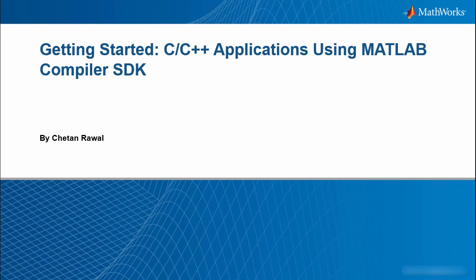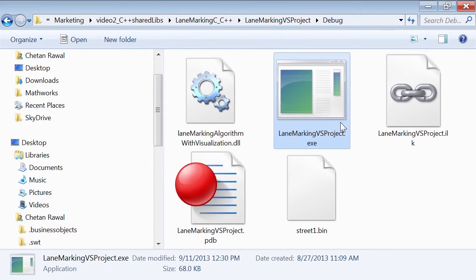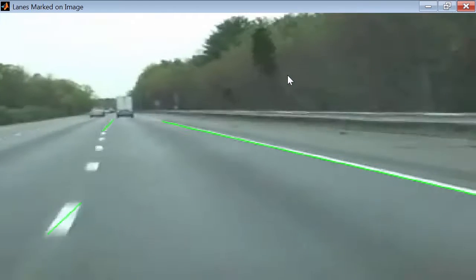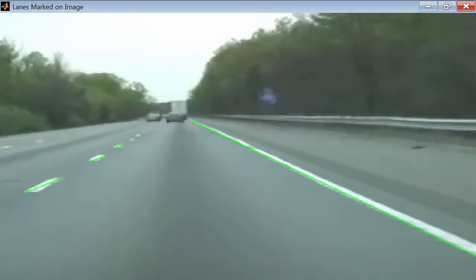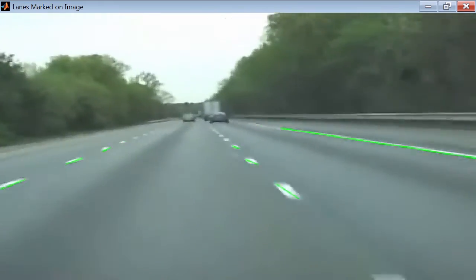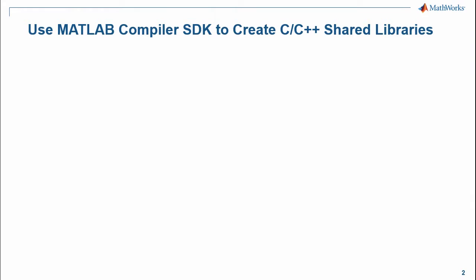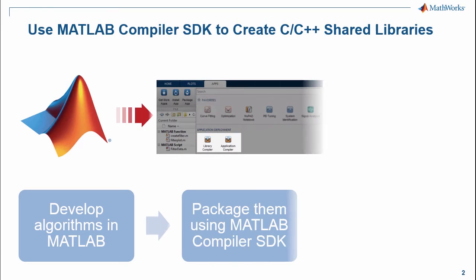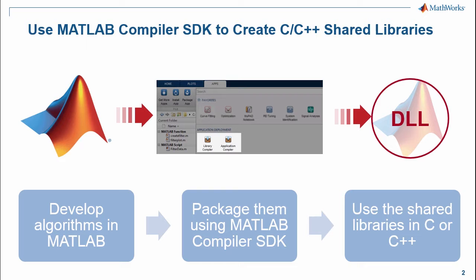This video shows how you can integrate a MATLAB algorithm within a C or C++ project. Here is an application written in C++. It uses video from a camera fitted in front of a car to find lanes on the road while driving. The algorithm that does the lane detection was developed in MATLAB. We use the MATLAB Compiler SDK to package this algorithm into a C shared library to be used outside the MATLAB environment.